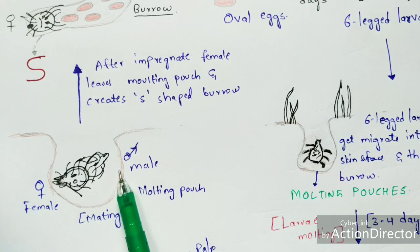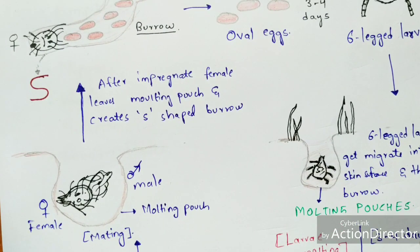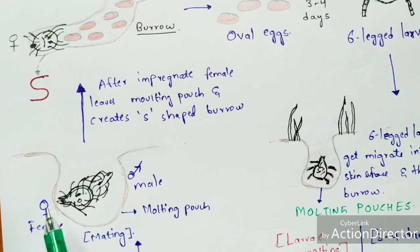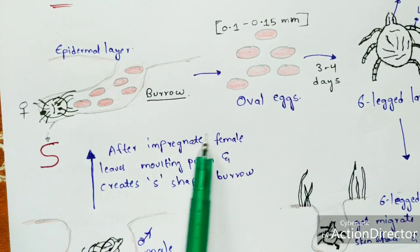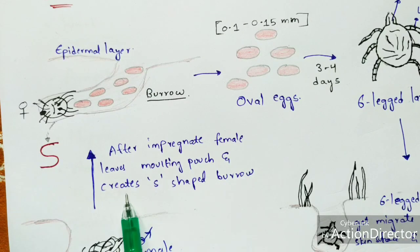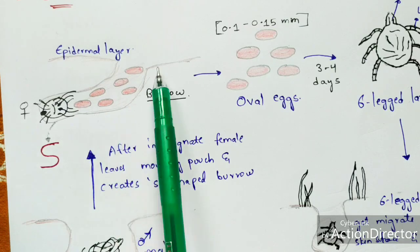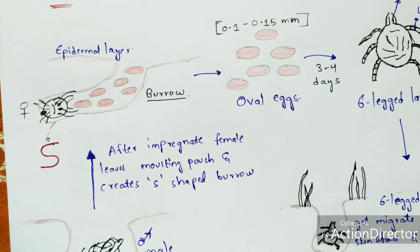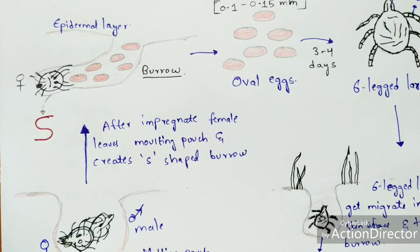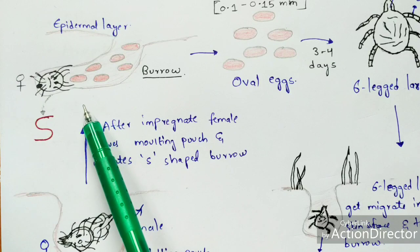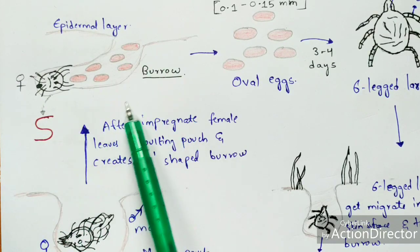Both the male and female mite undergo mating within the molting pouch. After mating, the male remains in the molting pouch while the impregnated female — that is, the female after copulation — escapes from the molting pouch. The impregnated female searches for an empty area where males are not present, and creates an S-shaped burrow where all the eggs are then laid throughout the burrow.